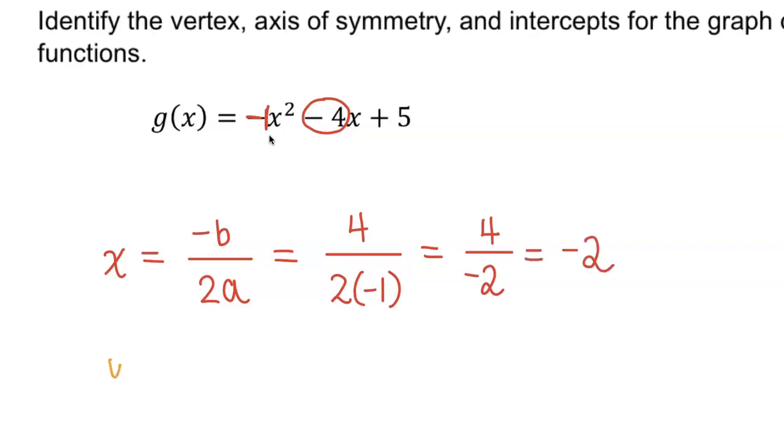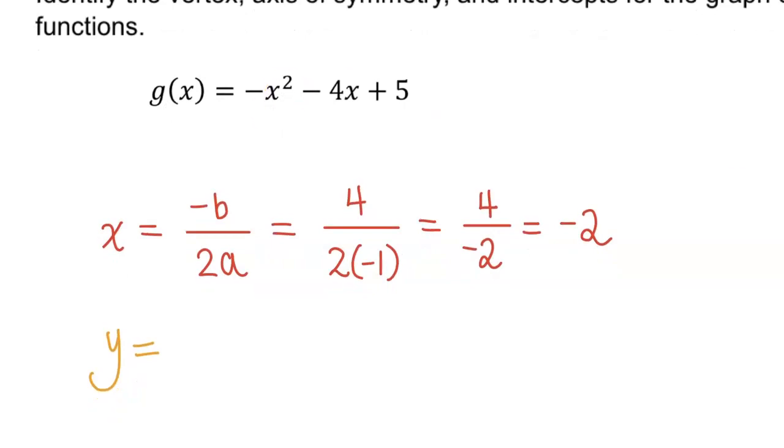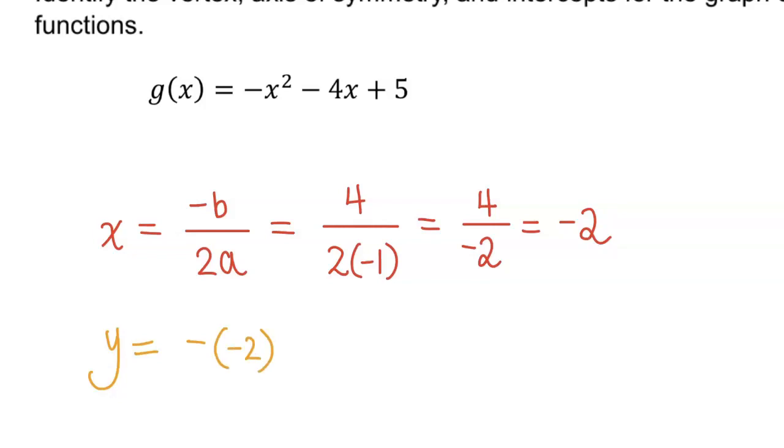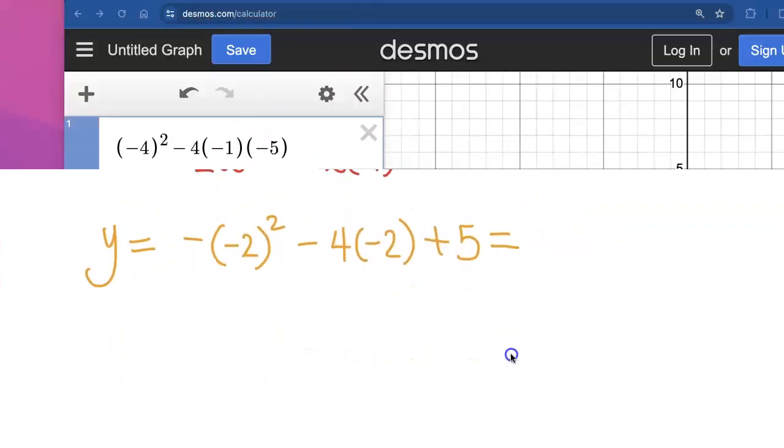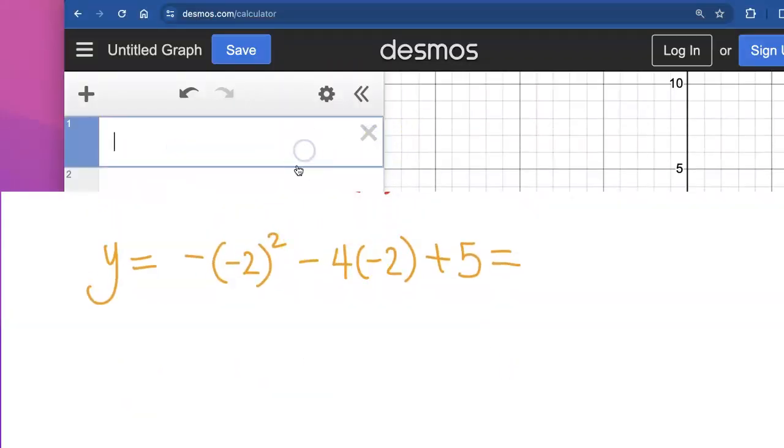Now let's go find the y value. To find the corresponding y value, just plug in that x that we just found into the function. So we will get negative, negative 2 squared, minus 4 times negative 2, plus 5. I will use my scientific calculator to evaluate that. And you can use your scientific calculator on your exam to evaluate. So negative, negative 2 squared, minus 4 times negative 2, plus 5. The vertex is way up at 9.